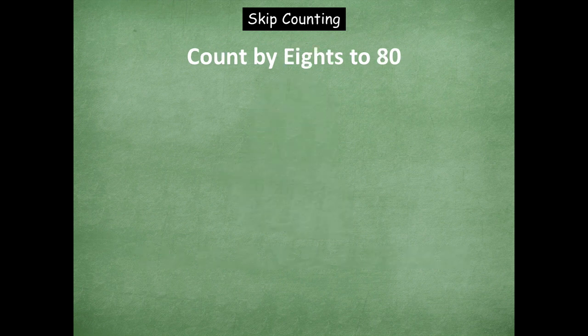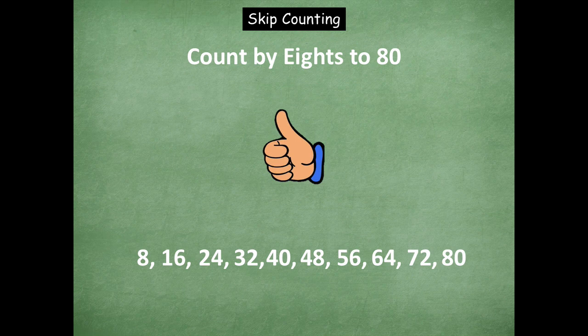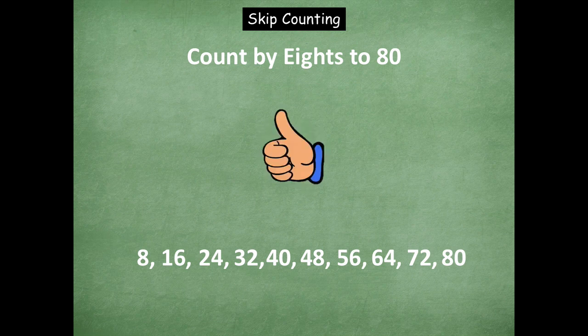Let's count by eights to 80. Counting up: eight, 16, 24, 32, 40, 48, 56, 64, 72, 80. Counting down: 72, 64, 56, 48, 40 — and back up: 48, 56, 64, 72, 80.